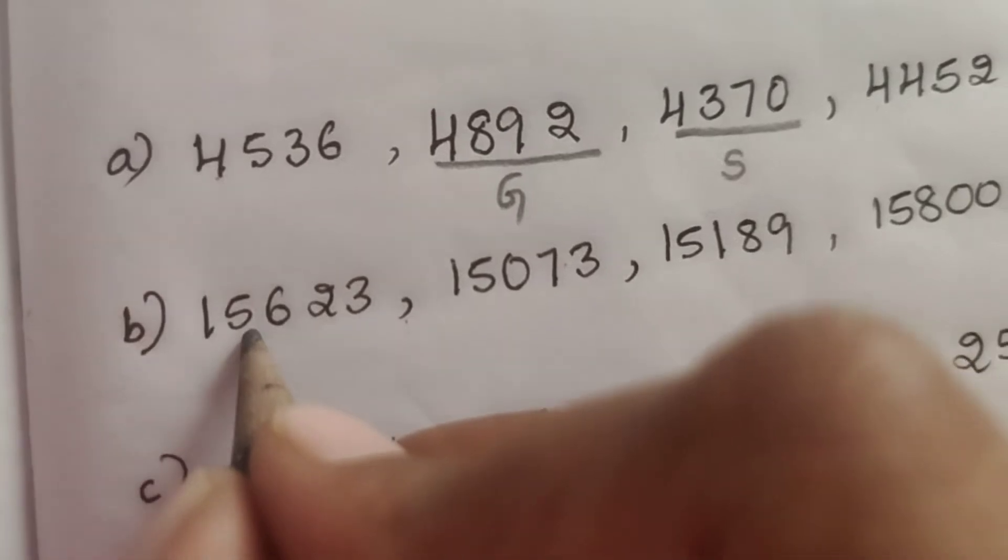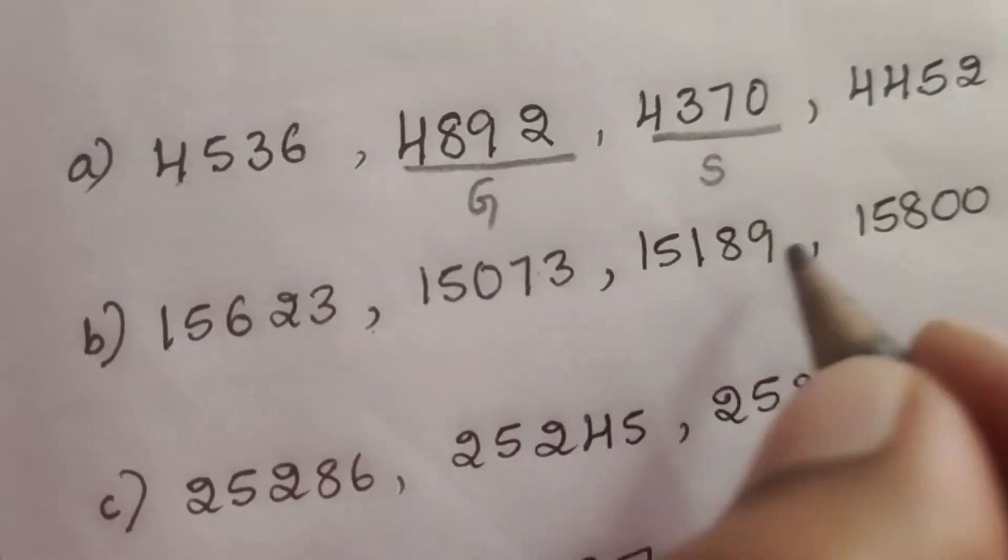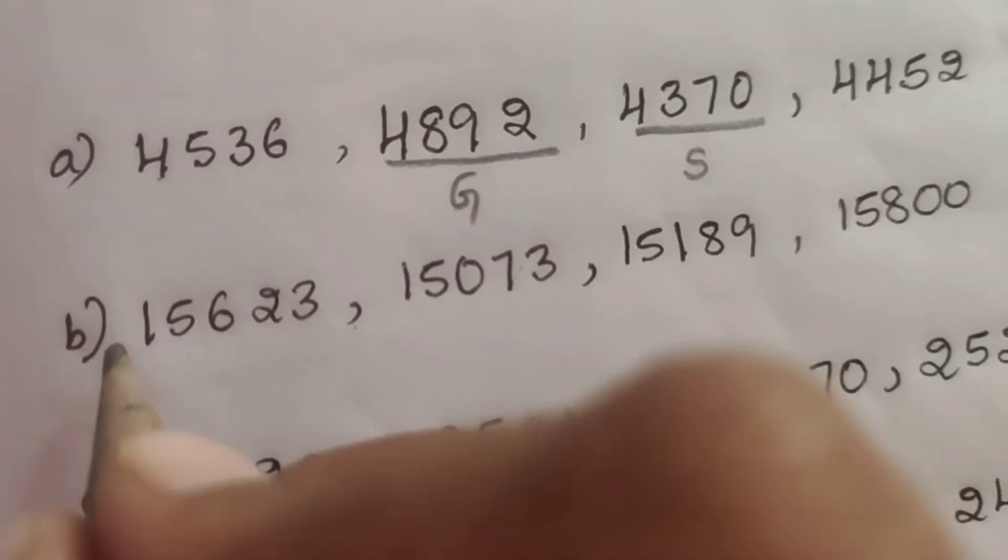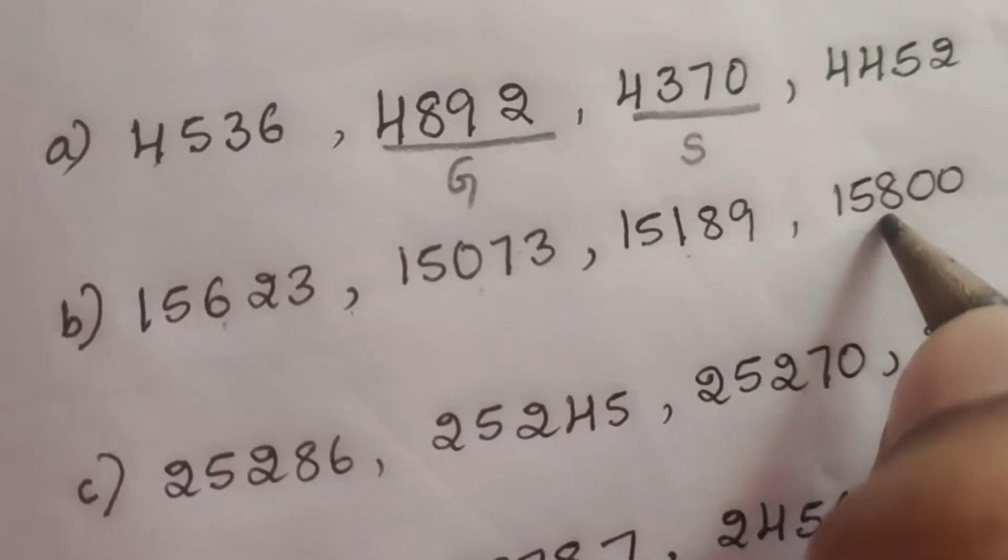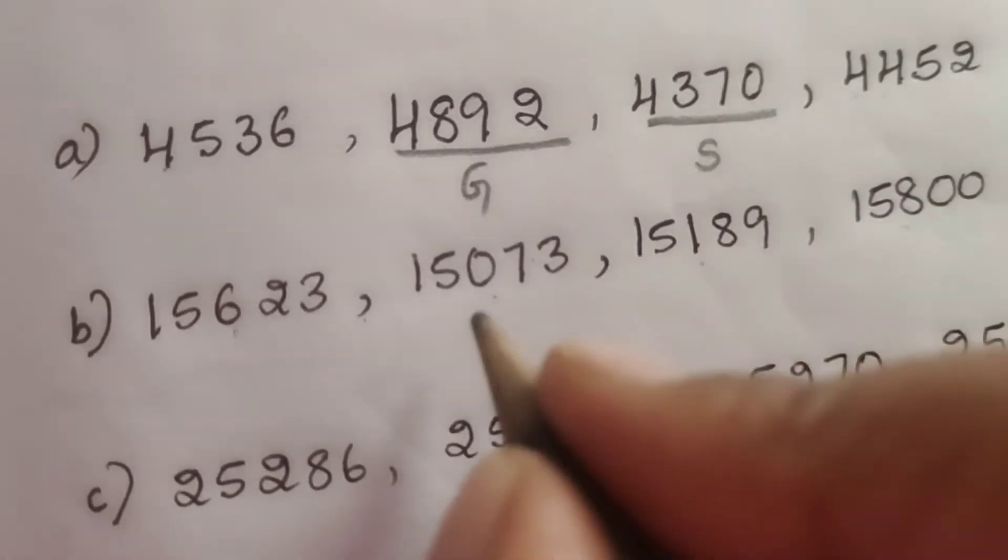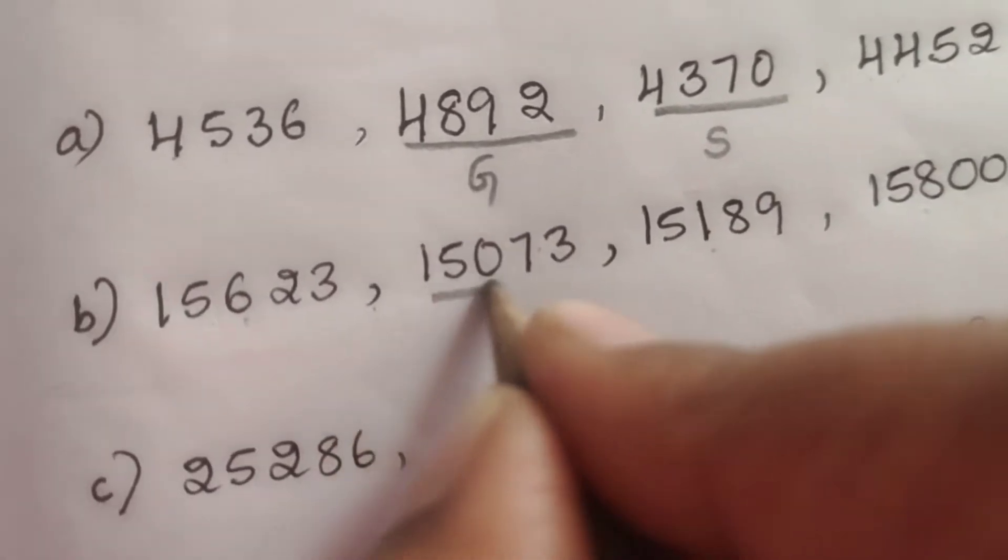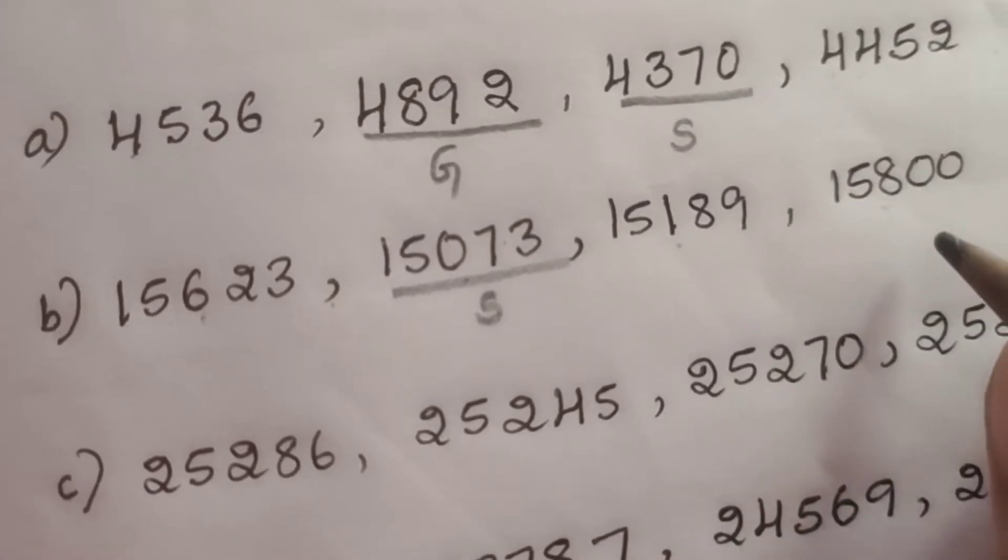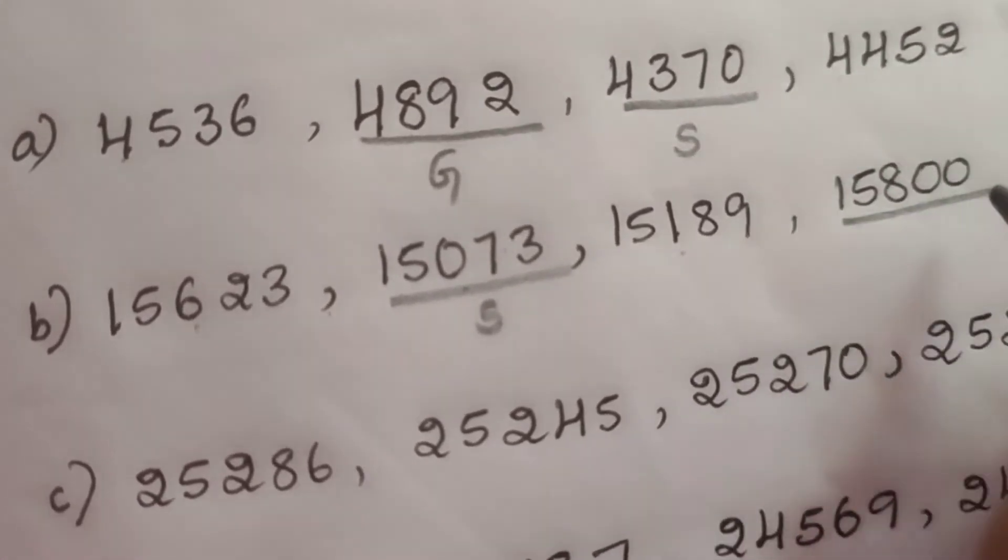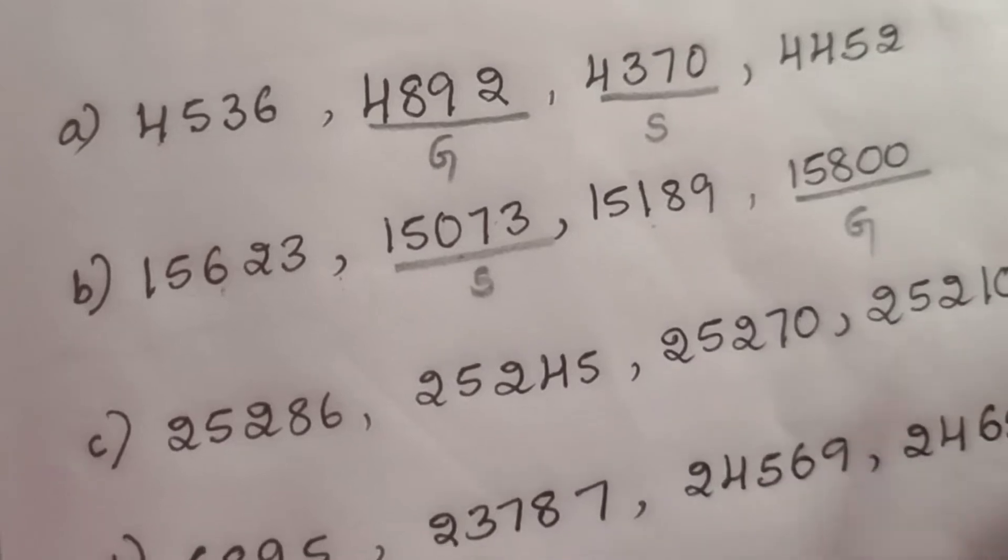Let us see the second one: 15,623, 15,073, 15,189, 15,800. Everywhere 15,000 is there. This is 600, this is 0, this is 100, this is 800. So easily you can say 15,073 is the smallest and 15,800 is the greatest.